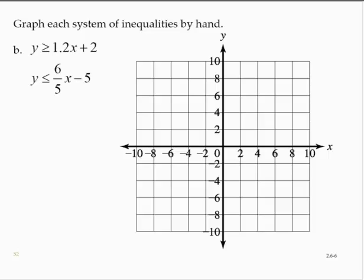Graph the system: y is greater than or equal to 1.2x plus 2, and y is less than or equal to 6 fifths x minus 5. So y is greater than or equal to 1.2x plus 2. I'll use purple here for the first one. That's in slope-intercept form.